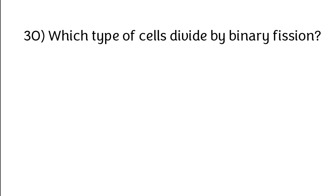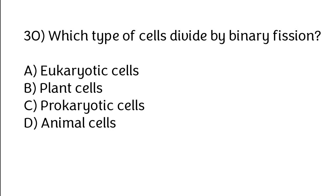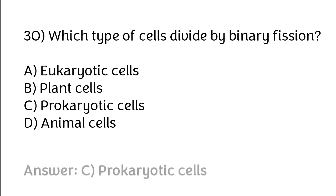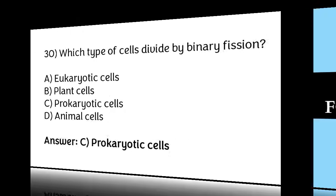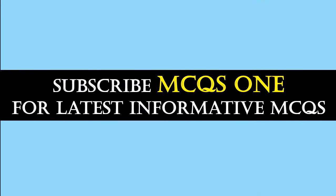Which type of cells divide by binary fission? Options: eukaryotic cells, plant cells, prokaryotic cells, animal cells. The correct answer is option C — prokaryotic cells divide by binary fission. Thanks for watching — subscribe to MCQ1 for the latest informative MCQs.